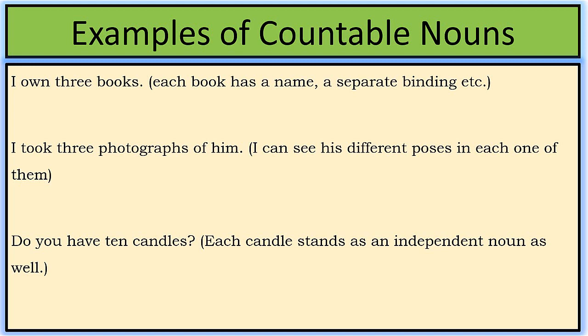Number 1: I own 3 books — each book has a name, a separate binding, etc. Number 2: I took 3 photographs of him — I can see his different poses in each one of them. Number 3: Did you have 10 candles? Out of these 10 candles, each candle stands as an independent noun as well.